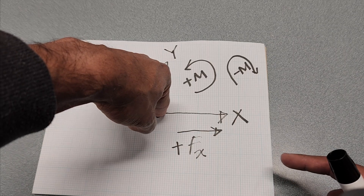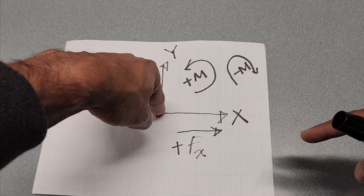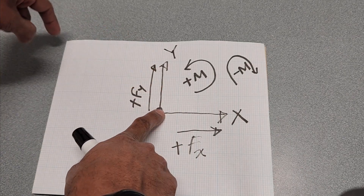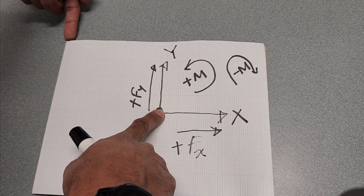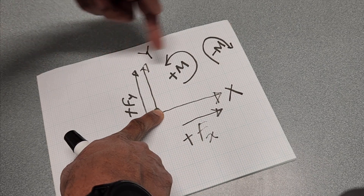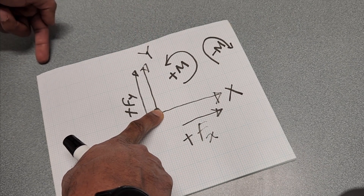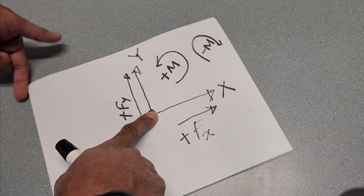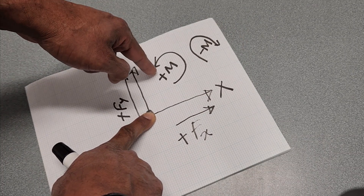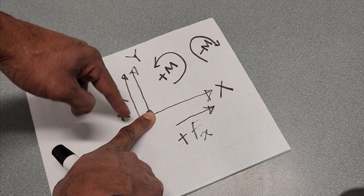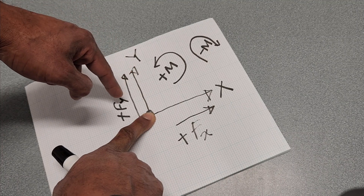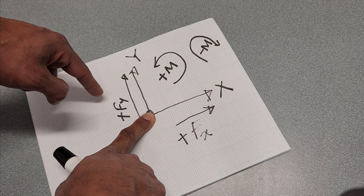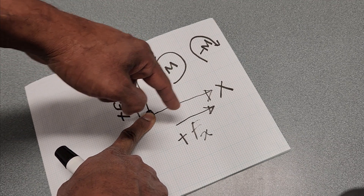I can produce the same positive counterclockwise moment by simply applying a negative y-force right here. It is still rotating counterclockwise, but the force is applied downward — negative y-axis. This negative force is still causing a positive moment. The moment direction is counterclockwise, so it is positive regardless of the force direction.